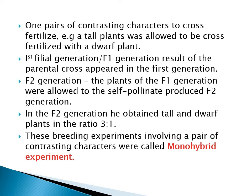Using one pair of contrasting characters for cross fertilization — for example, tall plants were crossed with dwarf plants. The F1 generation result from the parental cross appeared in the first generation. In the F2 generation, the plants of the F1 generation were allowed to self-pollinate to produce the F2 generation. In the F2 generation, he observed tall and dwarf plants in the ratio 3 is to 1.